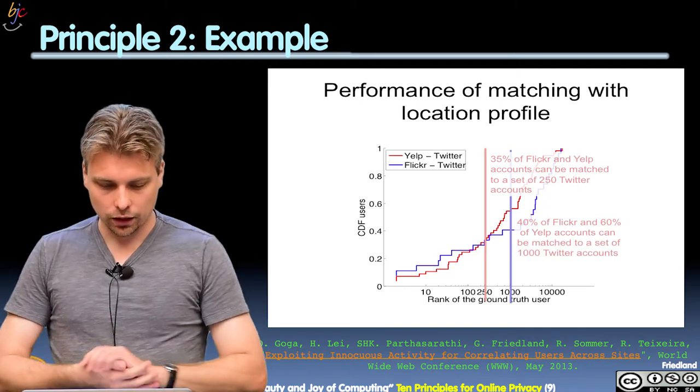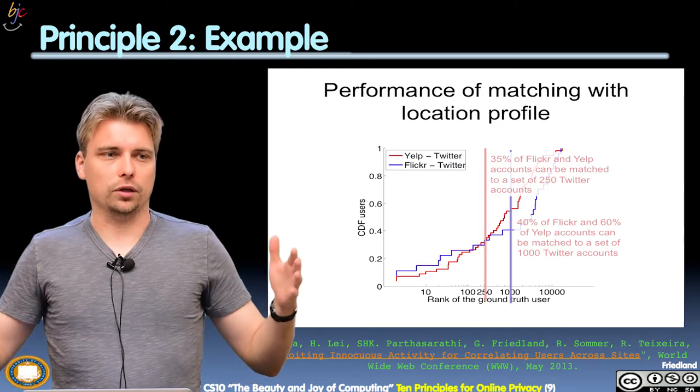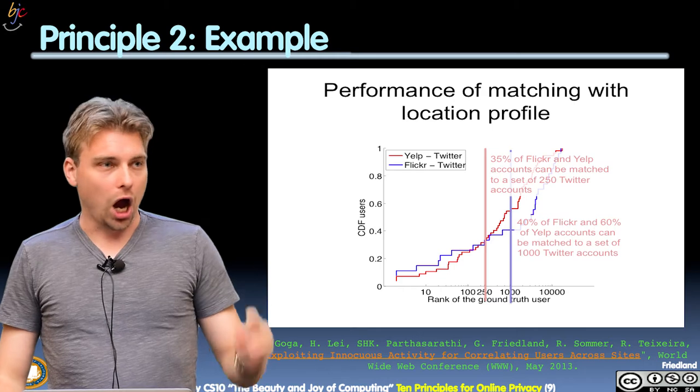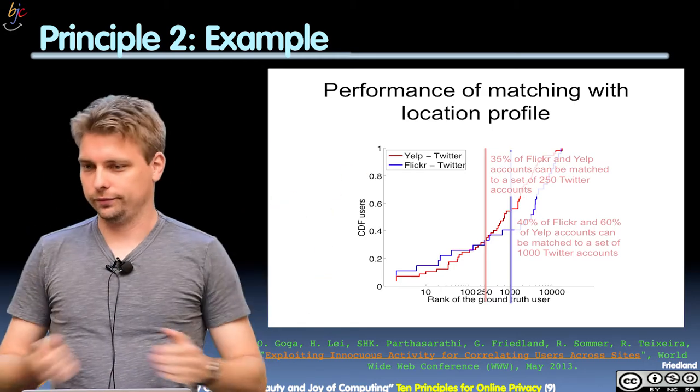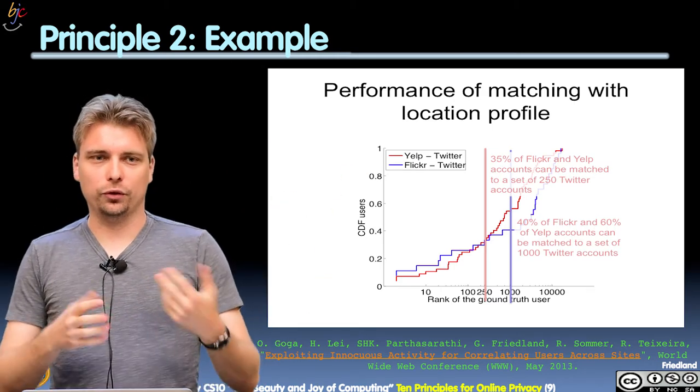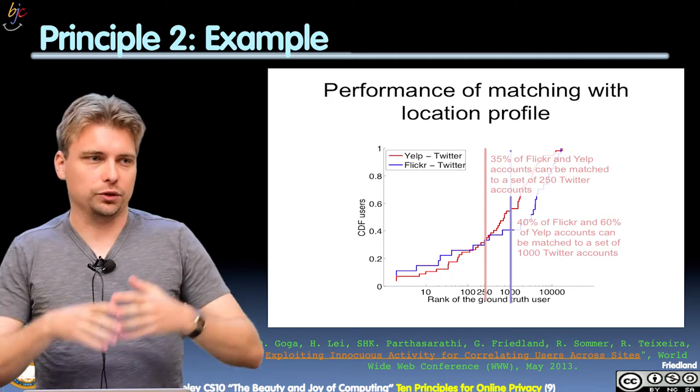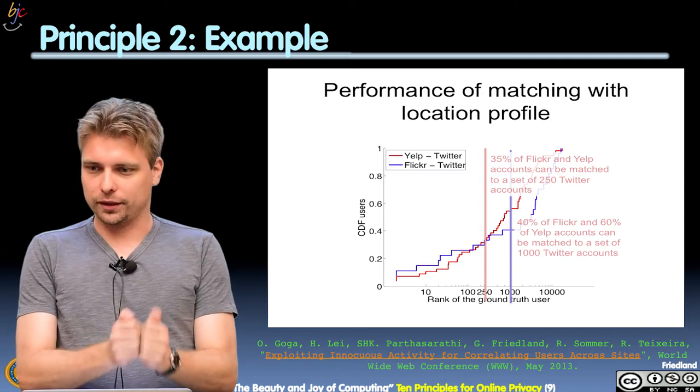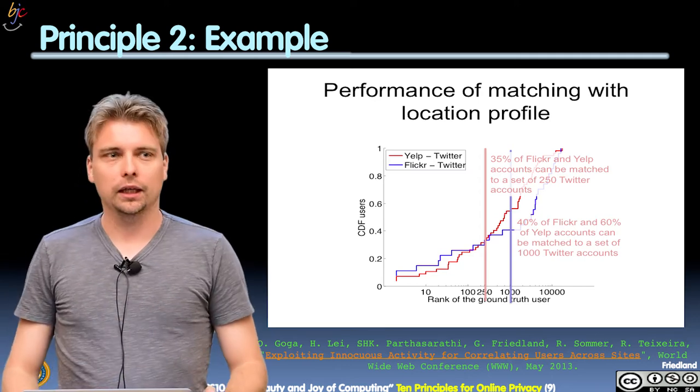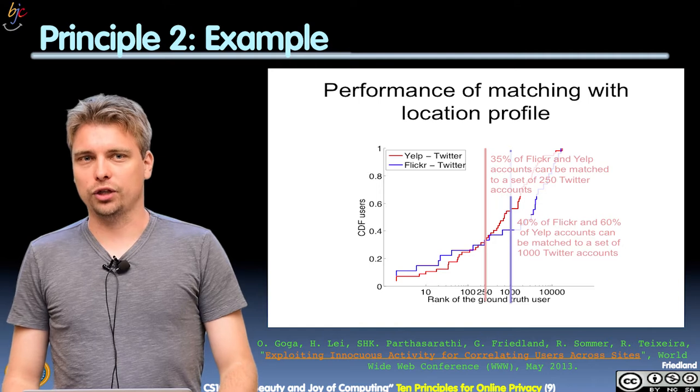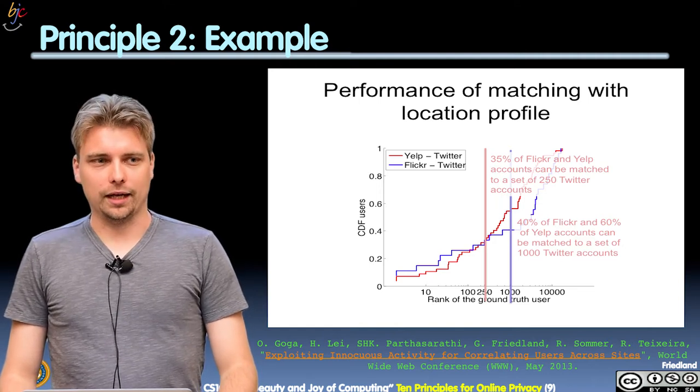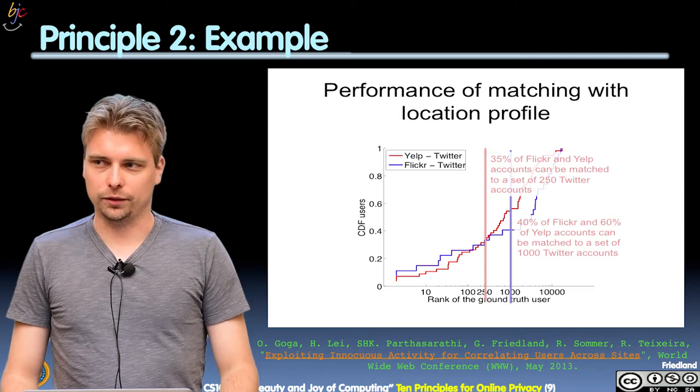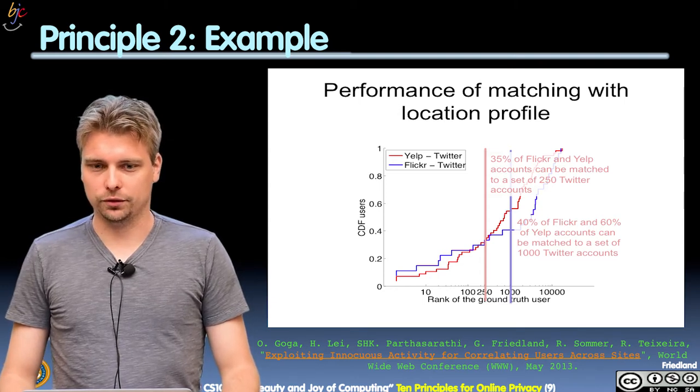And so this is what we did. So the initial idea that we have was, okay, you go to Yelp and you review that restaurant and you say, oh, I had this awesome spaghetti carbonara. And of course, before you do that on Yelp, because that's maybe what you do like the next day, you go on Twitter and tweet your friends, oh, I'm having this awesome spaghetti carbonara at this restaurant. And the question we asked is, what's the chance that somebody has around the same time the same dish twice, three times, four times, five times, right?